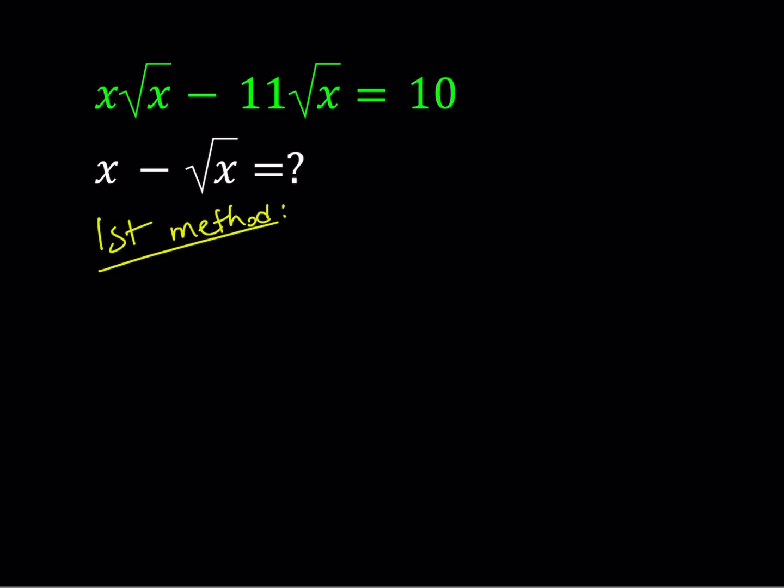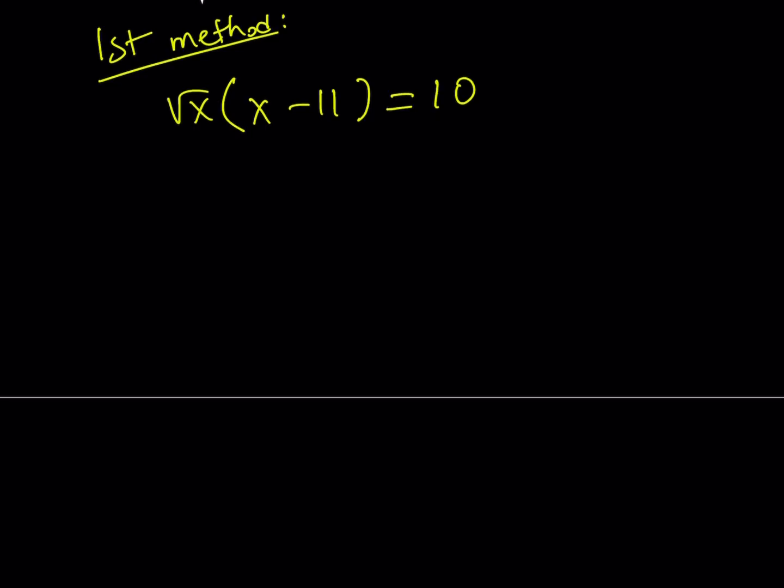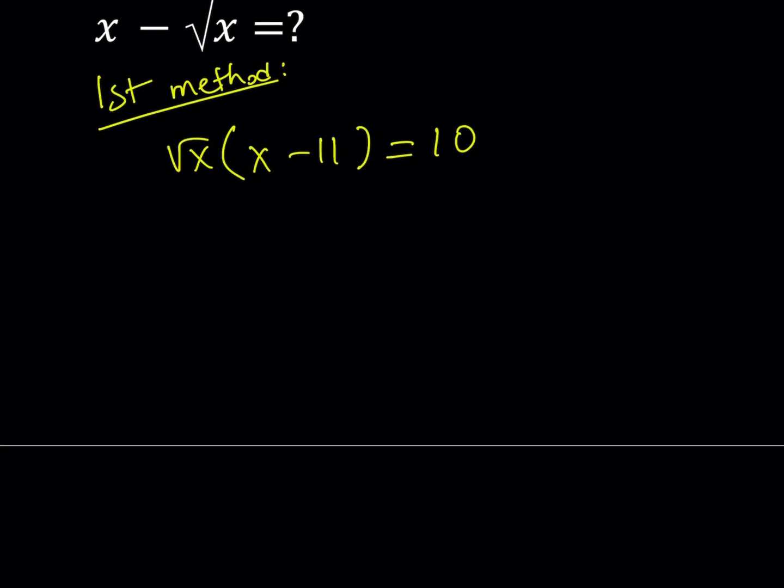Since we were given an expression, why don't we go ahead and solve for x and then substitute into the second one. So to make the solution a little easier, I want to factor out square root of x on the left hand side. Notice that it's a common factor. I'm not going to divide both sides by that. I don't want to get a rational equation. I just want to keep it as a polynomial.